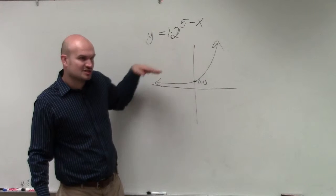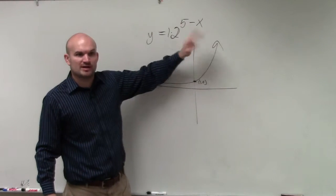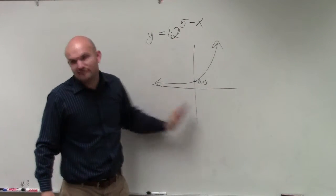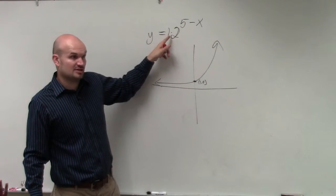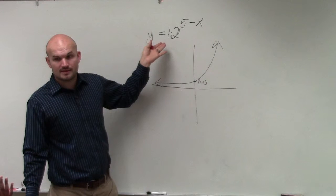Remember, the base just kind of tells you how fast it's going to curve up, right? So the larger that number 2 is, just the faster it shoots up. But it still crosses at 0 comma a, which in this case is 1. So it's going to look just like this.